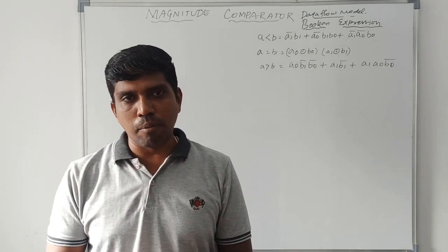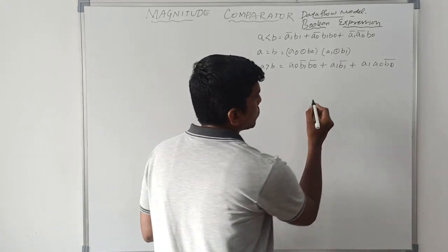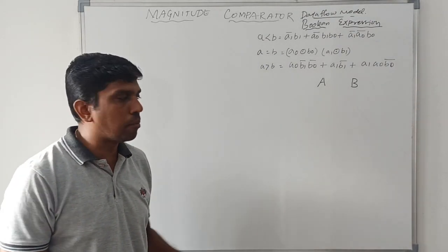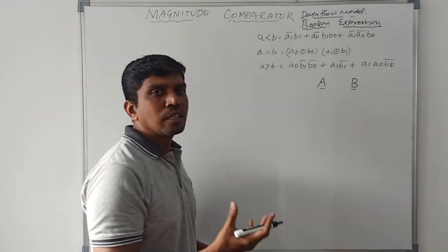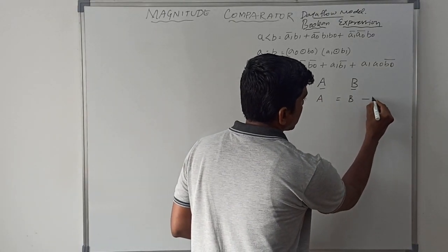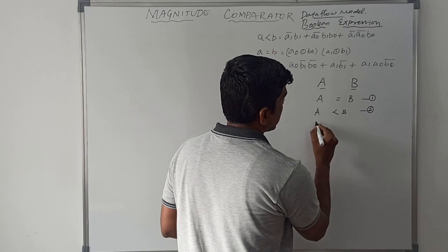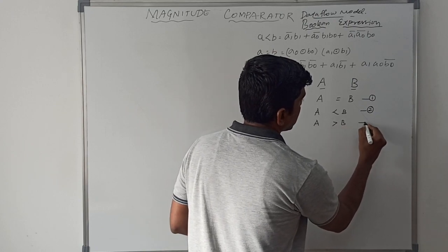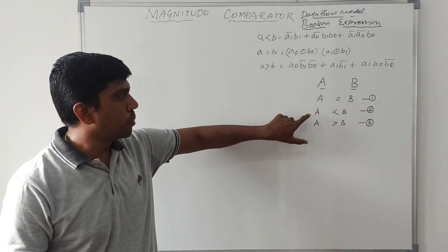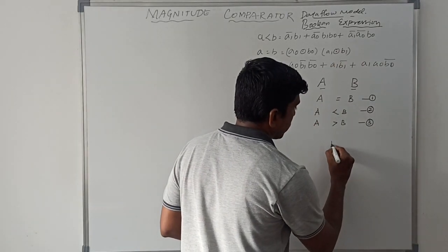Before writing the program, let me recall the term comparator. A comparator simply compares two parameters. Taking two variables A and B as inputs given to the comparator, after comparison it may produce three possible outputs: A equal to B, A less than B, or A greater than B.